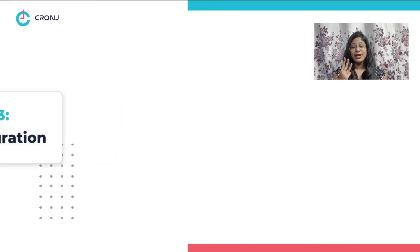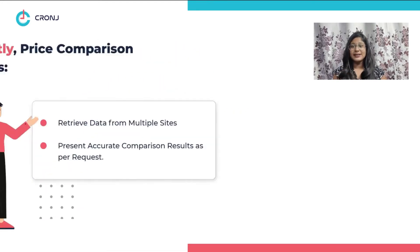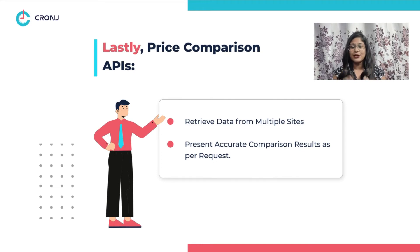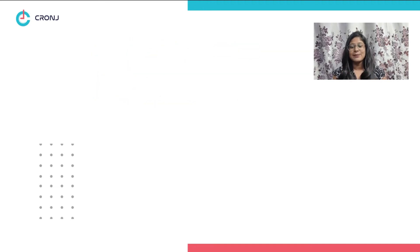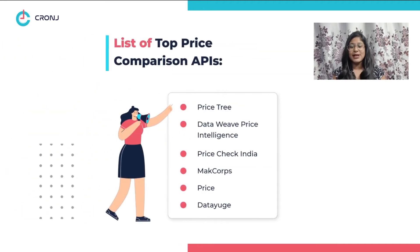Number three: API integration. Finally, the API integrates with various shopping platforms to derive and present accurate product comparison results as per your request. Thus, you can find various price comparison APIs in the market.